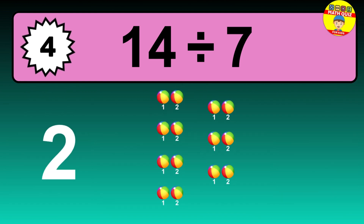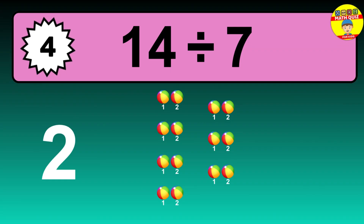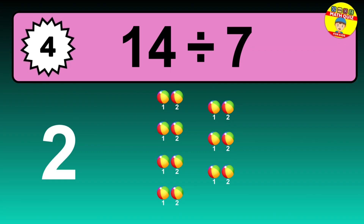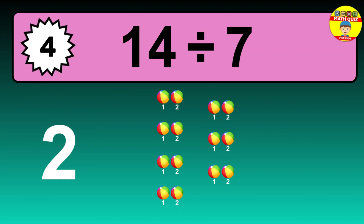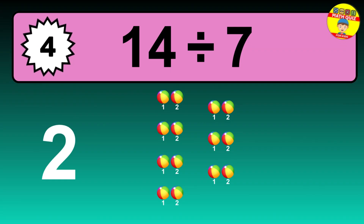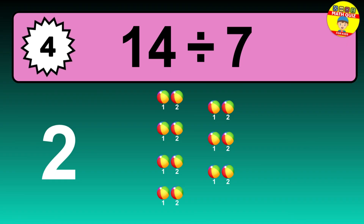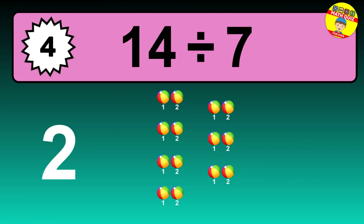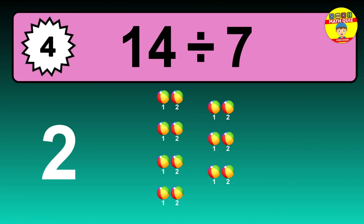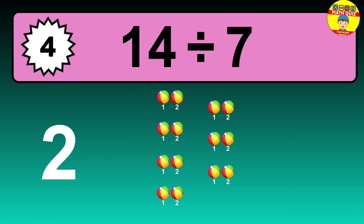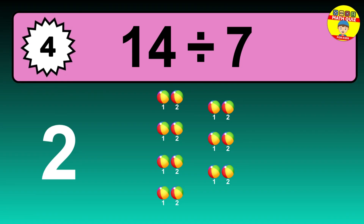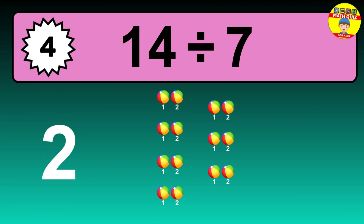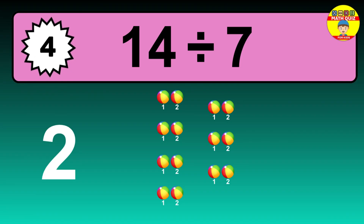Let's go to the solution. Divide the number 14 by 7. Each group contains 7 units, so dividing 14 by 7 results in 2 equal groups. Thus, the result is 14 divided by 7 equals 2.